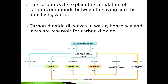The carbon cycle refers to the circulation of carbon dioxide, which is found in the atmosphere. Human beings, for example, exhale carbon dioxide as an excretory product. Carbon is very important because carbon dioxide is what plants use to make food in the process known as photosynthesis. The carbon cycle explains the circulation of carbon compounds between the living and the non-living world.